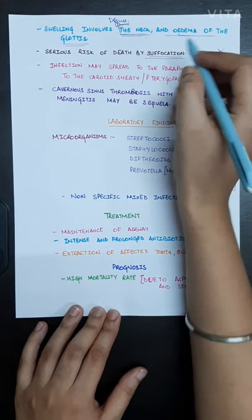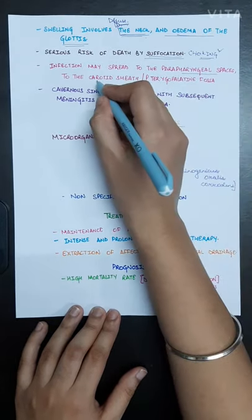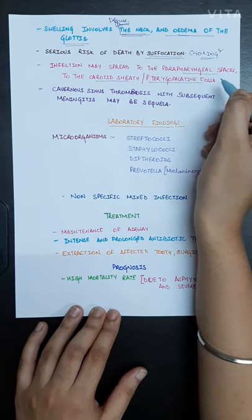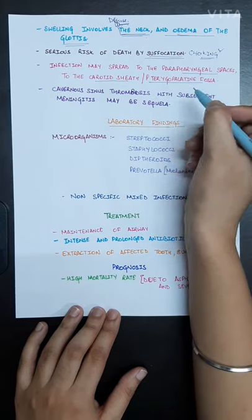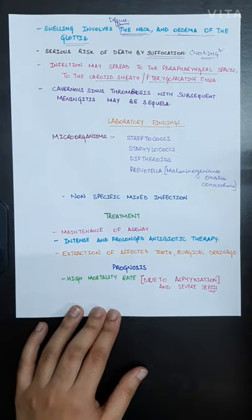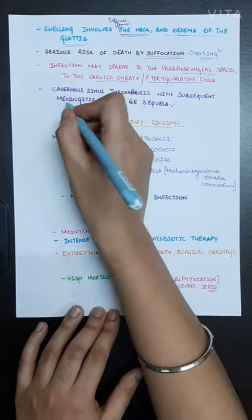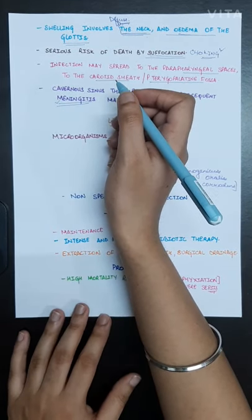Infection may spread to the parapharyngeal spaces, to the carotid sheath, or to the pterygomaxillary fossa. Cavernous sinus thrombosis may occur after this Ludwig's angina if it keeps on spreading, or subsequent meningitis may also occur. So it is a dangerous or toxic cellulitis basically.